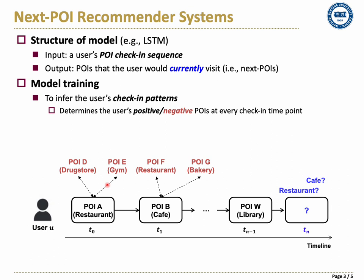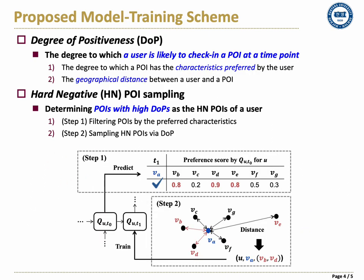Generally, existing methods simply employ random negative sampling of non-visited POIs for a user. However, in this study, we claim that hard negative sampling can be more effective in improving accuracy.